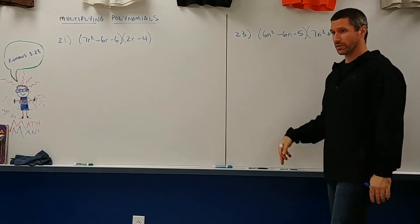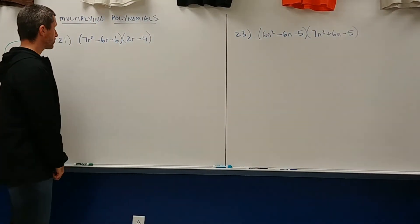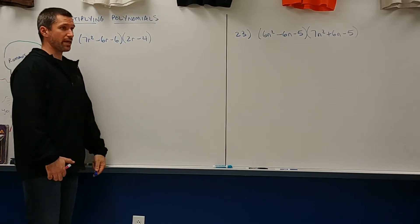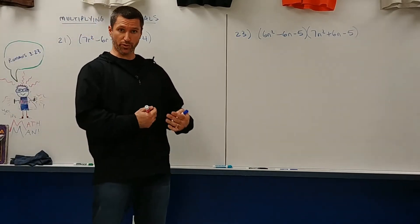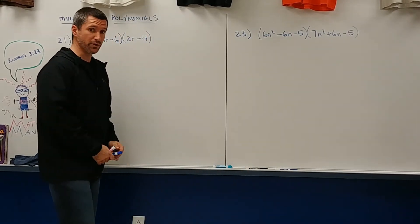Today, we gotta choose which one you're gonna do. FOIL won't work because that only works for a binomial times a binomial. So over here, I'm gonna look at a distribution approach. And over there, I'll do a matrix, and then you can decide which one you like best. Okay, here we go. Take good notes.